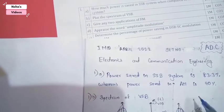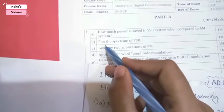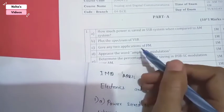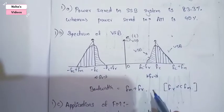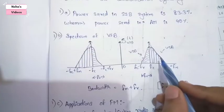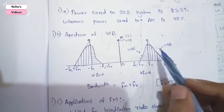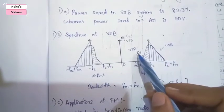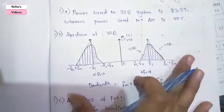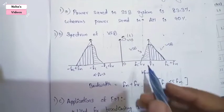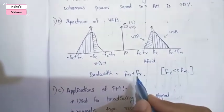The next question asks to plot the spectrum of VSB - VSB full form is vestigial sideband. You can see this vestigial sideband frequency spectrum. In the upper sideband, the entire spectrum is transmitted, and in the lower sideband, a small part of it is transmitted, which is called VSB. The bandwidth can be written as FM plus FE.